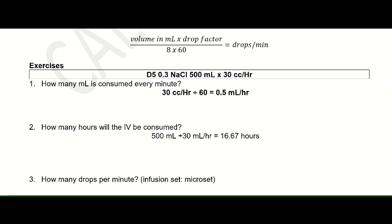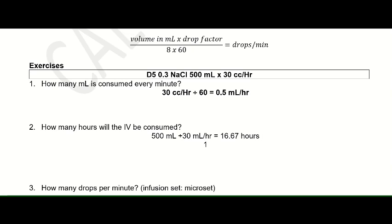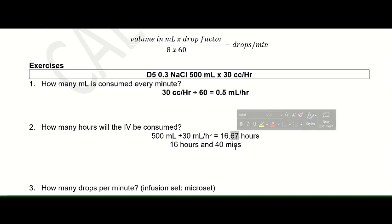Is 16.67 hours the same as 16 hours and 67 minutes? No — that is not how you convert decimal hours to hours and minutes. The correct approach is to multiply 0.67 by 60. So 0.67 times 60 gives 40.2, meaning this IV should run for approximately 16 hours and 40 minutes. Remember, the 0.67 is the fraction of an hour, so multiply by 60 minutes.